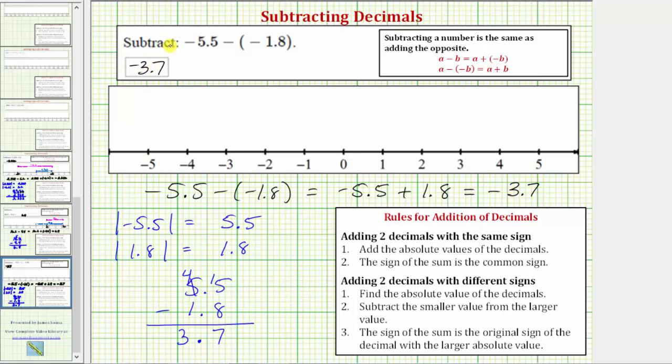And again, this should make sense because the negative 5.5 is outweighing the positive 1.8. Let's also show this sum on the number line.